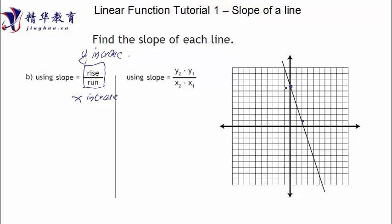Point one and point two — let me make these thicker so you can see better. Now let's see what the x value of point one is. The x value is zero. And then the y value is seven. So point one is (0, 7). The second point: the x value is two, and the y value is one. So point two is (2, 1).